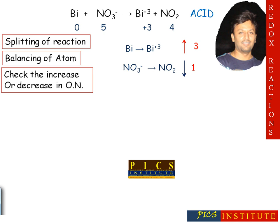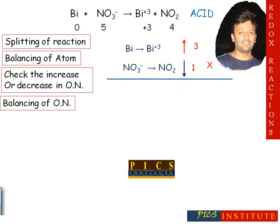Remember: increase in oxidation number should be equal to decrease in oxidation number. The next step is balancing of oxidation numbers — multiply with a suitable number so that increase and decrease become equal.